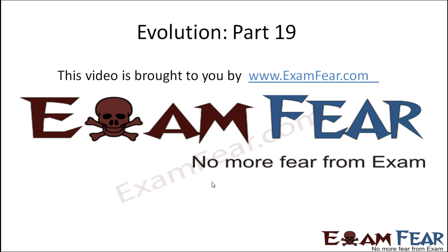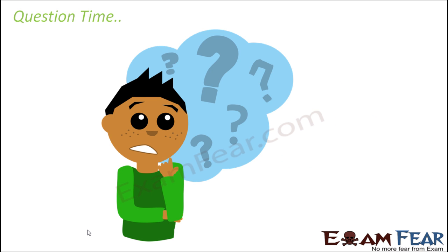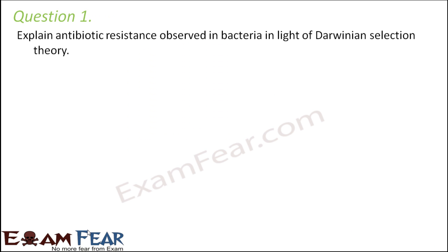Hello friends. This video on evolution part 19 is brought to you by examfear.com. We have reached towards the end of this lesson, so let us look at some questions to see if you have got the lesson right. Question number 1: Explain antibiotic resistance observed in bacteria in light of Darwinian selection theory.